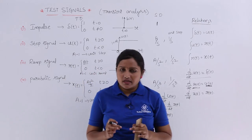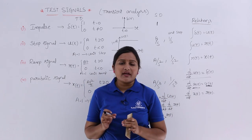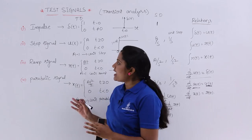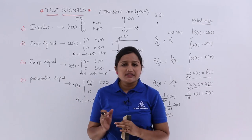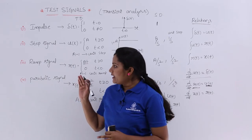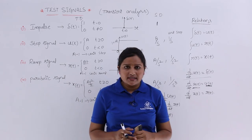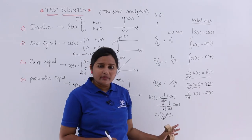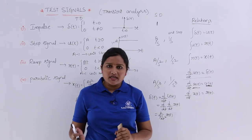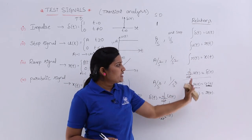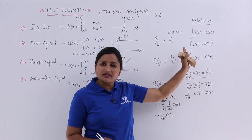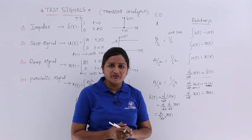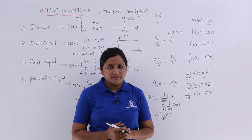So this is about test signals in transient analysis. We have impulse, step, ramp, and parabolic signals. These are the S-domain representations and the relations between the test signals.